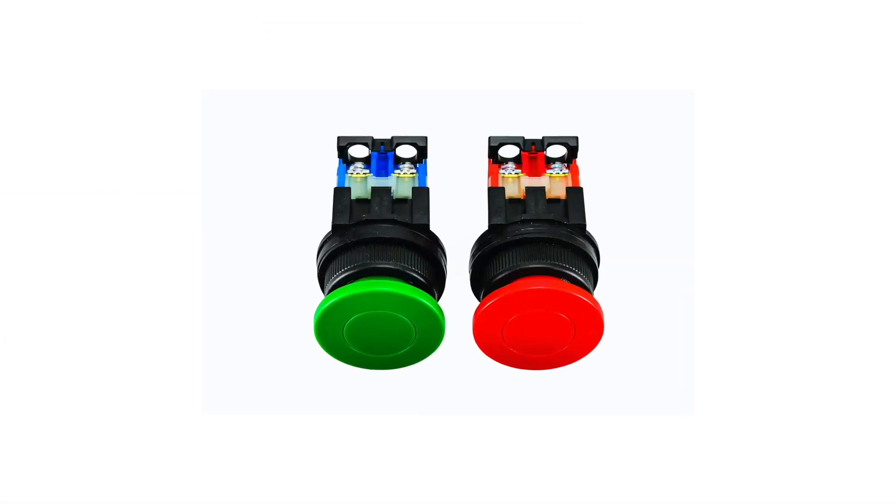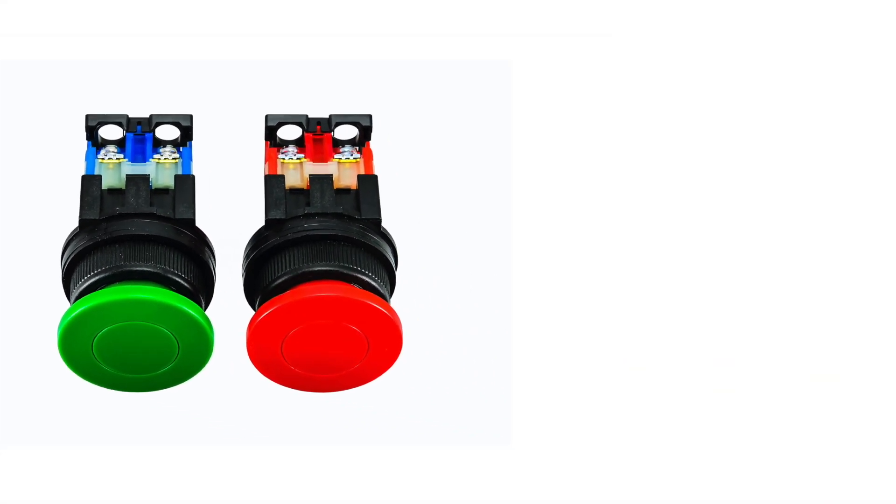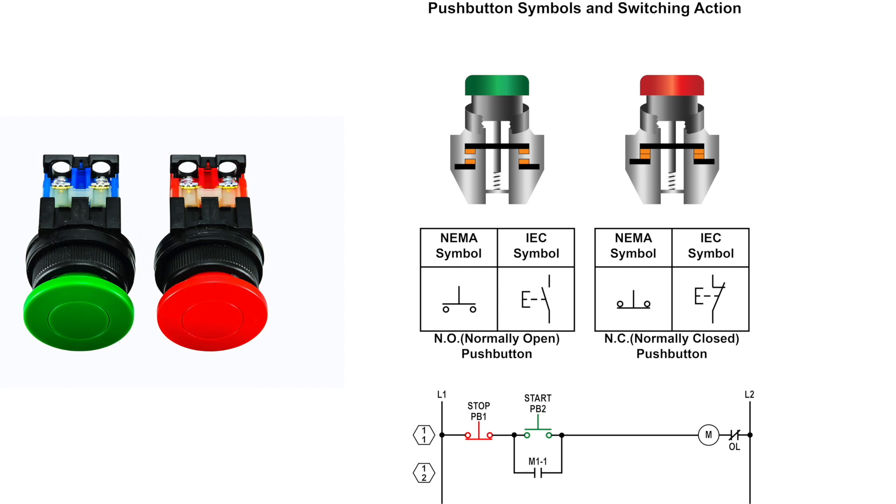The first device we'll be talking about is the push button. A push button is a control device used to manually open or close a set of contacts to perform an action on a machine or process. The abbreviations associated with push buttons are NC and NO, which are normally closed and normally open.